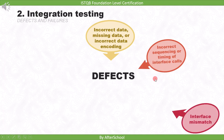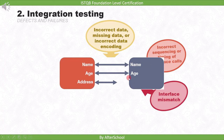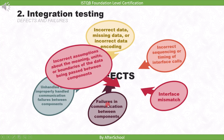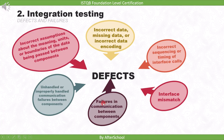The next defect is interface mismatch. For example, one module is sending three data items, but the other module only accepts two — so communication will fail. Related to this, we can also find failure in communication between components, and unhandled or improperly handled communication failures. Another defect type is incorrect assumptions about the meaning, units, or boundaries of data being passed between components.